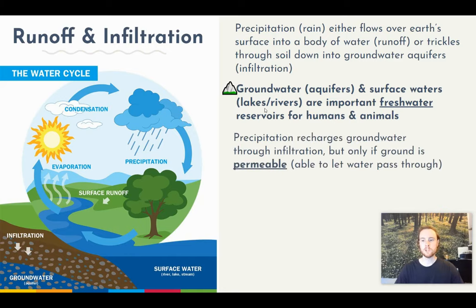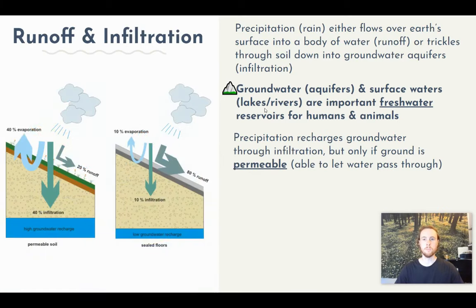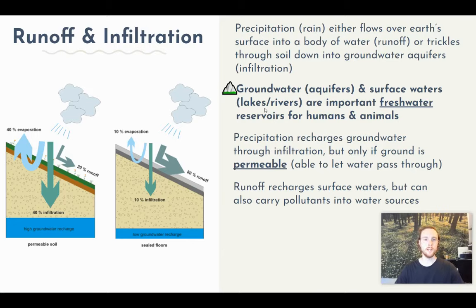Precipitation can only recharge groundwater if that water can infiltrate the soil. A surface covered by grass and soil allows water to infiltrate and recharge underground aquifers. But an impermeable surface doesn't allow water to trickle through, so far more water leaves as runoff. Permeability is really important for groundwater recharge. Runoff, on the other hand, will eventually recharge surface waters — returning water to a lake, river, or pond, which are important sources for humans.